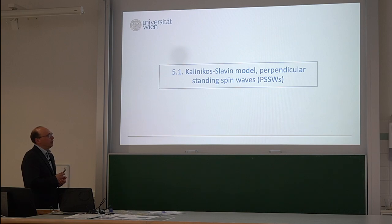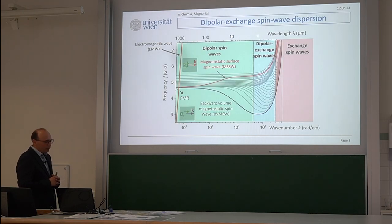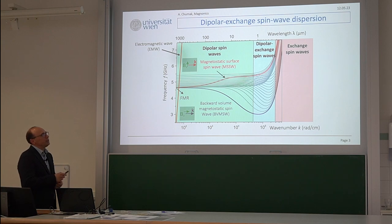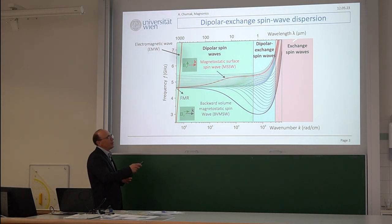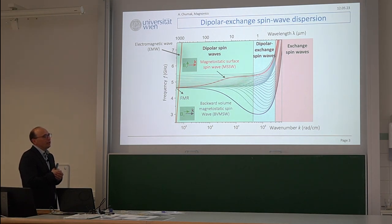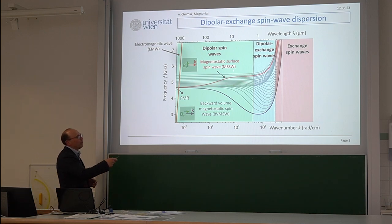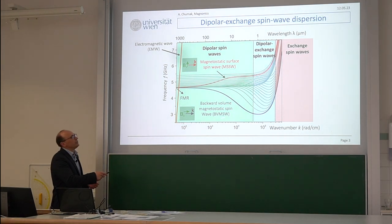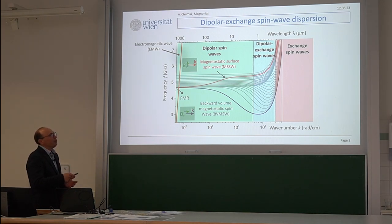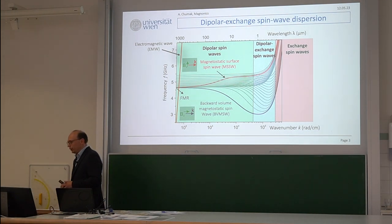Starting with the Kalinikos-Slavin model and perpendicular standing spin waves. In previous lectures we already discussed exchange spin waves, where we take into account exchange interaction between spins, and also dipolar magnetostatic waves, where we take into account only dipolar-dipolar interaction, solving Maxwell's equations. But as you can see, in reality we need to take into account both dipolar and exchange interaction to plot dispersion properly.